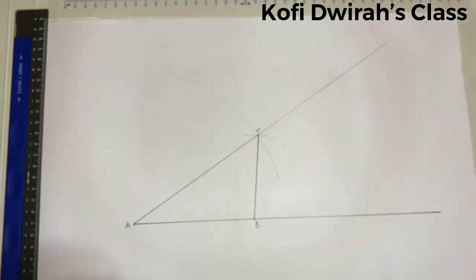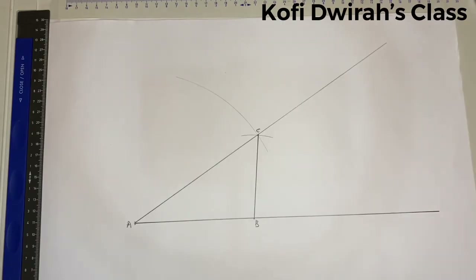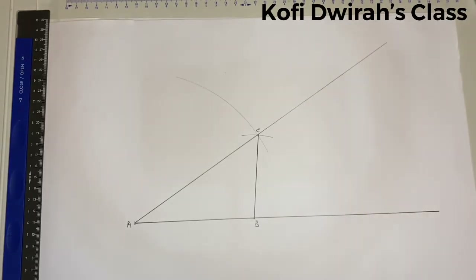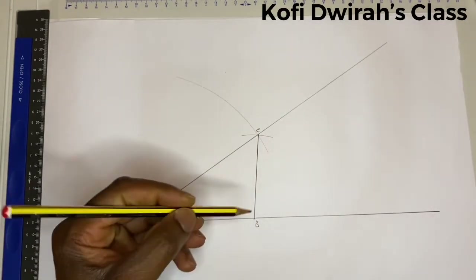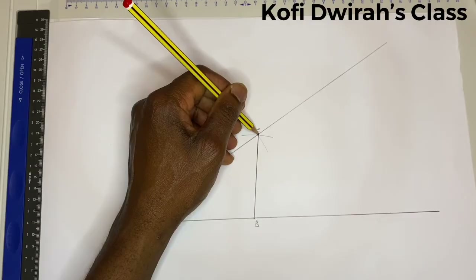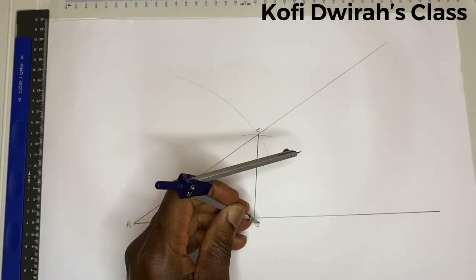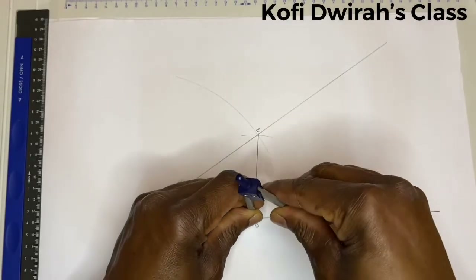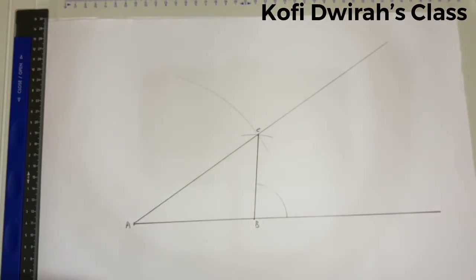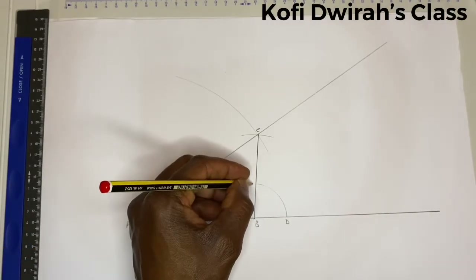Now to ascribe the circle to this triangle, we are going to bisect the angles. You bisect this angle, you bisect this angle here, and you bisect this angle at this point as well. Let's start from point B — with your compass at point B, you draw an arc. We have points D and E marked here.